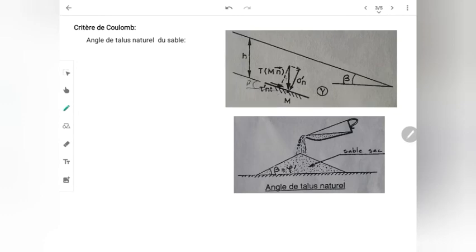φ dépend aussi de la répartition granulaire. Plus la granulométrie est étalée — c'est-à-dire qu'il y a un peu de toutes les dimensions — plus le sol a un φ plus important. Avec une granulométrie étalée, les petits grains s'introduisent dans les petits vides et les grands grains occupent les grands vides, ce qui améliore la densité du sol. Ce sont les paramètres influençant φ, mais pas la teneur en eau.